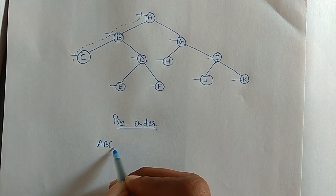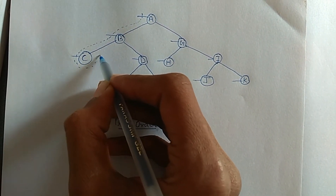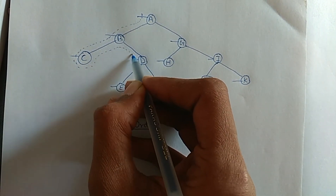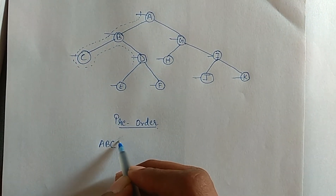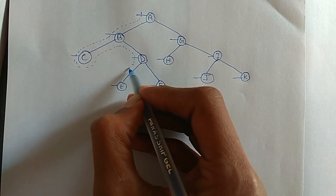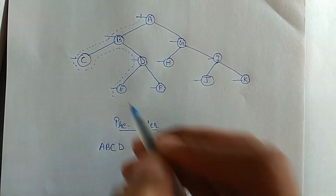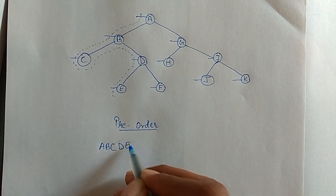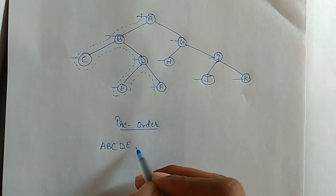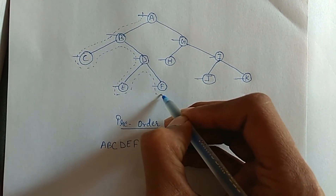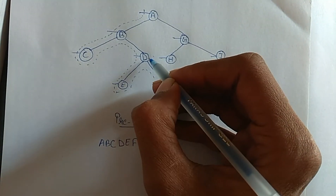Now again traversing the tree, it intersects C, so I write C. Then traversing further, it intersects node D. Then it intersects node E, and now it intersects node F. I will go upwards.